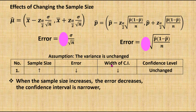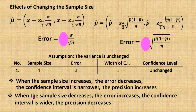So when the width of the confidence interval becomes smaller with the confidence level unchanged, then the precision is increasing, or the accuracy of the result increases. Similarly, when the sample size decreases, the error increases, and the confidence interval becomes wider, then the precision decreases.